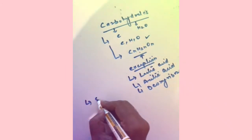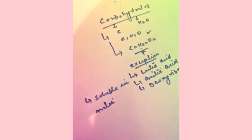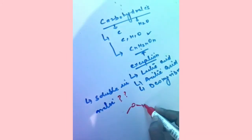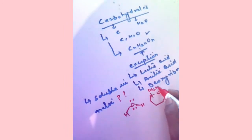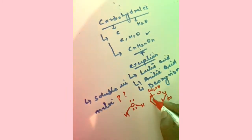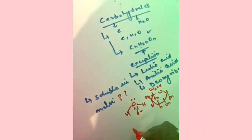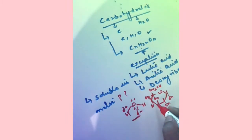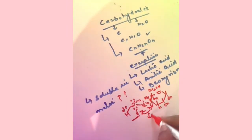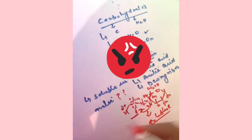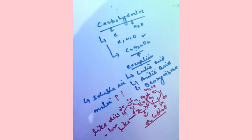The second property is that carbohydrates are soluble in water. Why are they soluble in water? Water has lone pairs of electrons, and in the carbohydrate molecule like glucose, the oxygen carries a partial negative charge and hydrogen carries a partial positive charge. These interact through hydrogen bonding, causing the molecules to approach each other and dissolve in water.